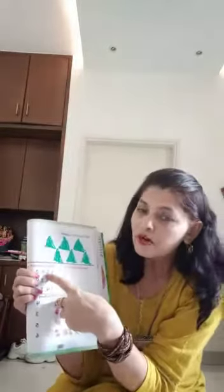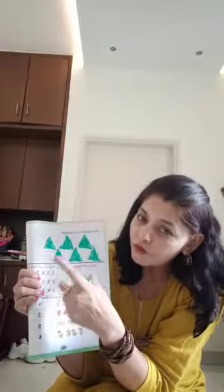Ab dekho — Shilpa ma'am aapko bata rahi hai: 1, 3, 4, 2 — ye galat hai. 1 ke aage 2 aate hai na. What comes after 1? 2, 3, 4. 1, 2, 3, 4 — bilkul thik hai. So hum 2nd wali line ko tick kar diya. 1, 4, 3, 6 — ye bilkul galat hai. So second wali jo line hai, wo hum tick kar diya — Shilpa ma'am ne tick kiya.